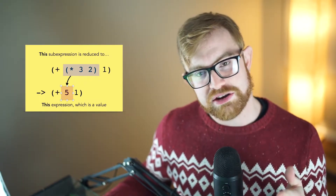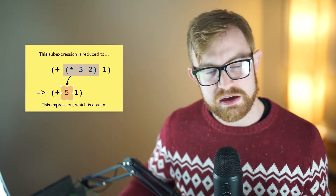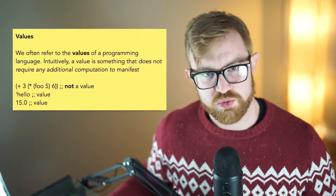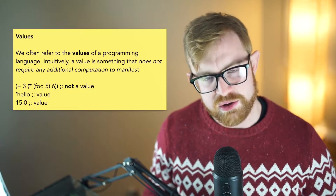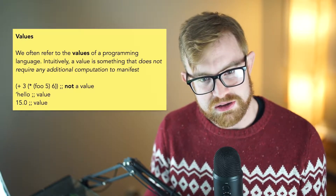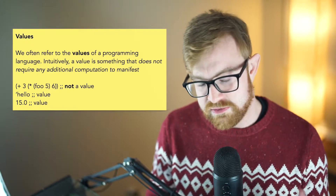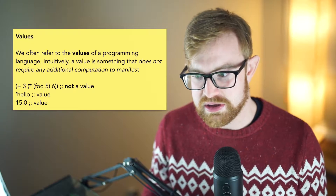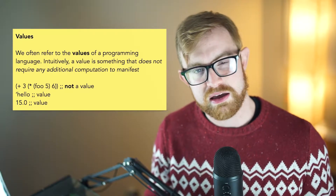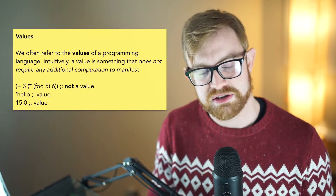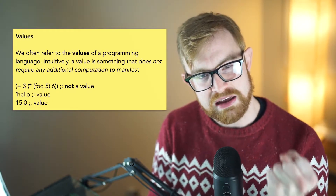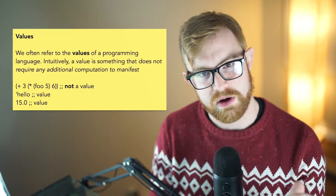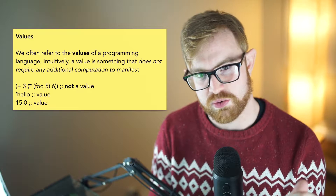We should note that the thing we actually come up with can't be computed on anymore — it is what is called a value. We will often refer to what we call the values of a programming language. There are a few different ways you can conceptualize what a value is. The first definition for this lecture: intuitively, a value is something that does not require any more computation to manifest. You can hold it in your hand without doing any additional work. Like a number — you can just put it in a register in the processor, you don't have to do any extra work to access it.